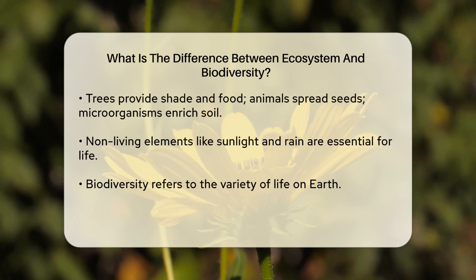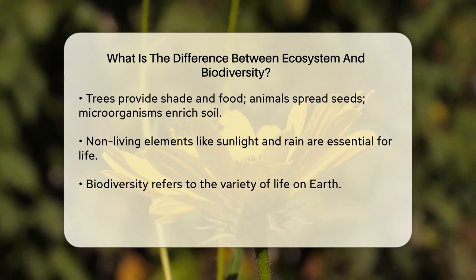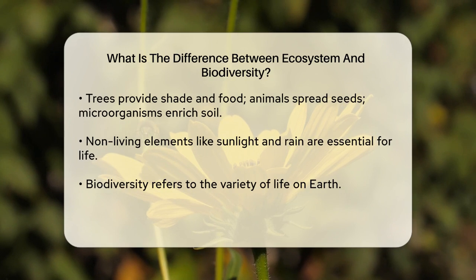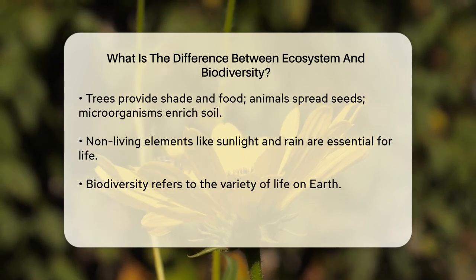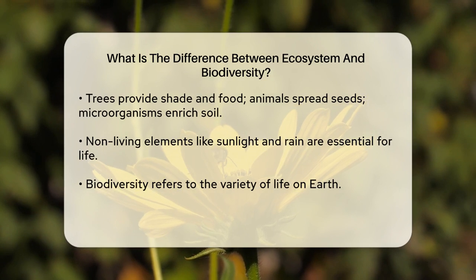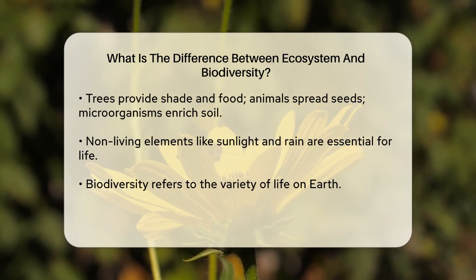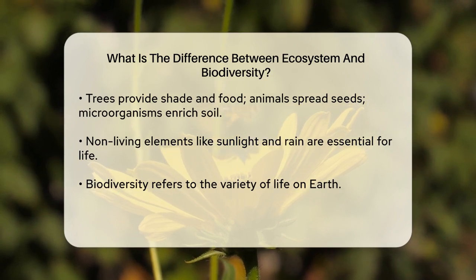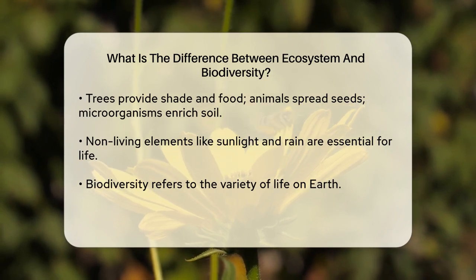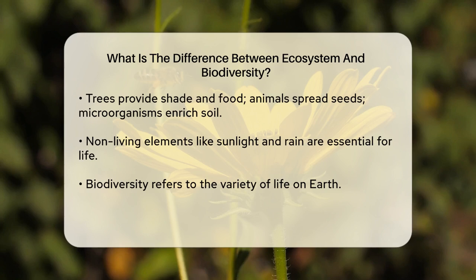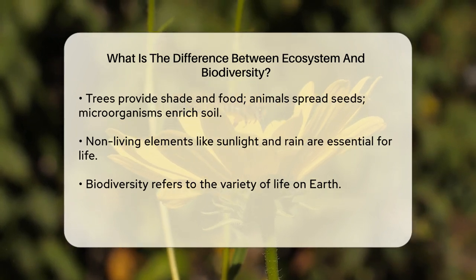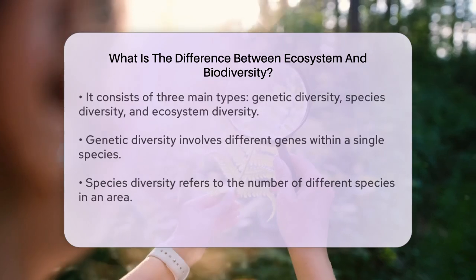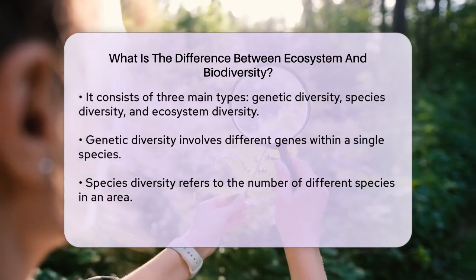Now let's move on to biodiversity. Biodiversity is all about the variety of life on Earth. It includes three main types: genetic diversity, species diversity, and ecosystem diversity. Genetic diversity is about the different genes within a single species. Species diversity is about the number of different species in an area, and ecosystem diversity is about the variety of different ecosystems.